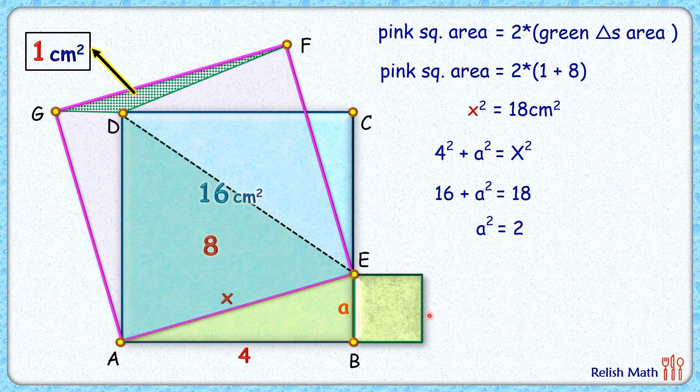And a² is what is area of this green square. And thus the area of green square is 2 cm². And that's our answer. I hope you enjoyed the solution. I will see you in next video. Till then. Tata. Bye-bye.